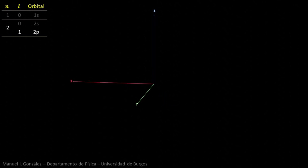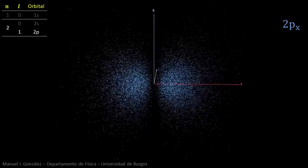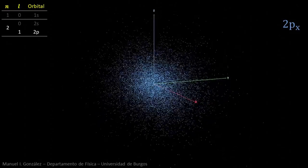Quantum number L equals 1 gives rise to three orbitals, called 2p. This is one of them. It consists of two lobes, which we can consider aligned along the x-axis.